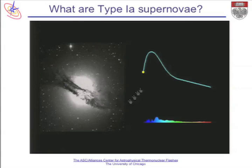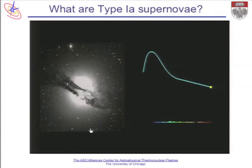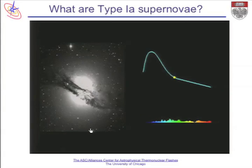Here I'll show how the light curve develops and the spectra. You can see it going through the peak and then declining. The decline from the first peak is really due to the radioactive decay of nickel-56, and the second tail is really due to the radioactive decay of cobalt into stable iron.